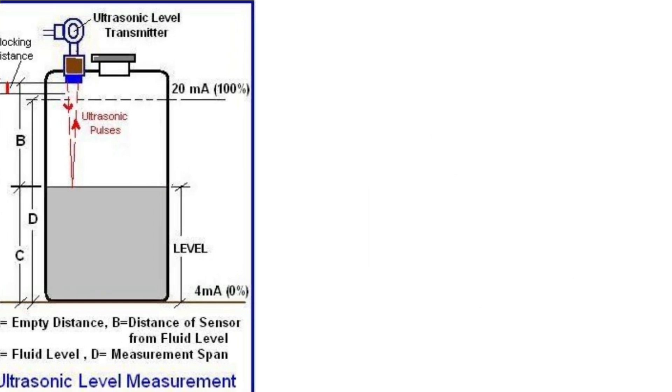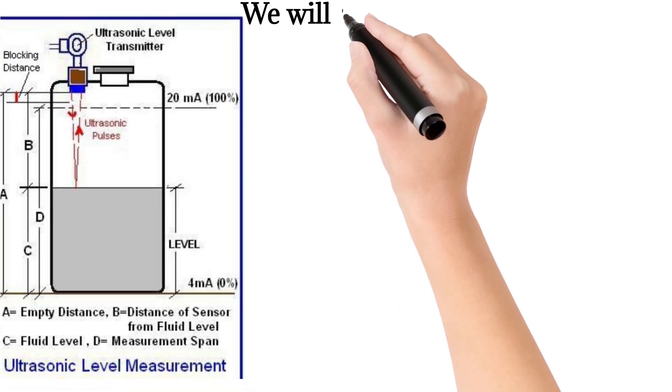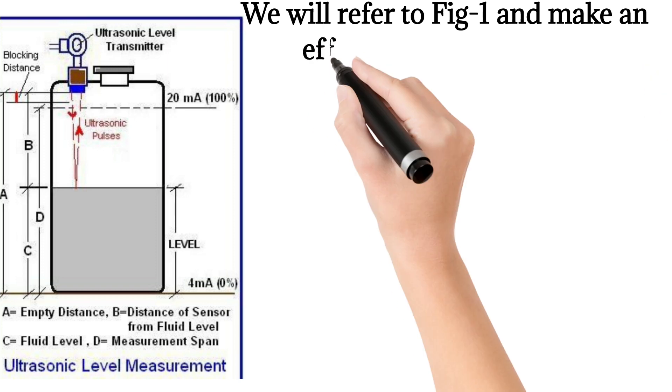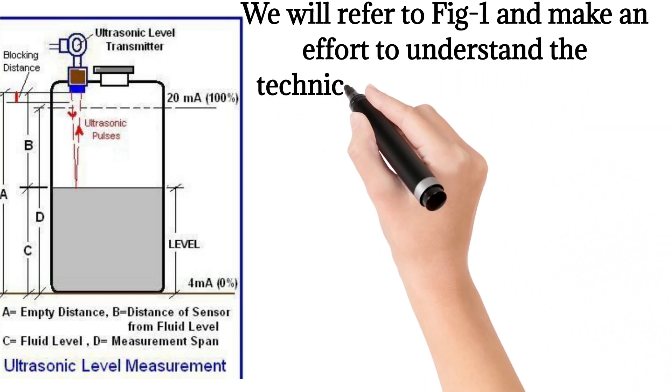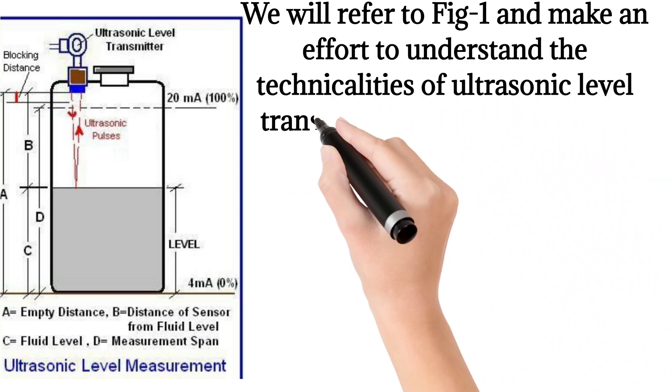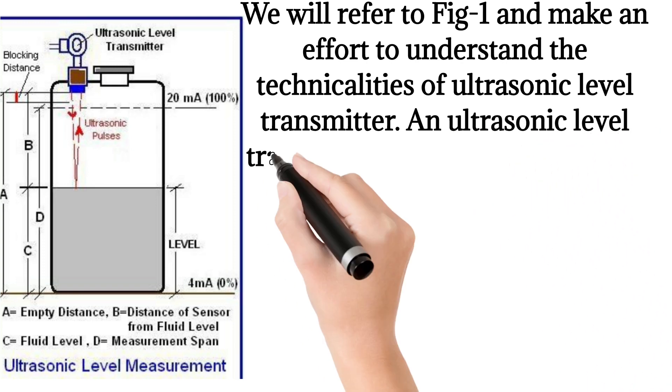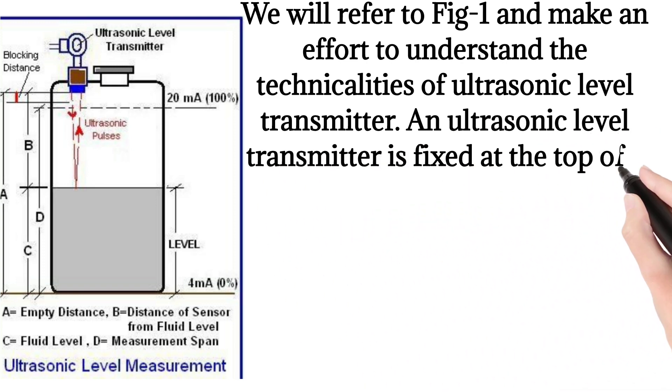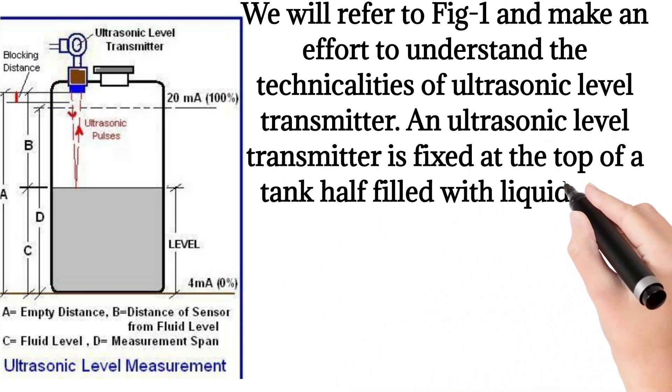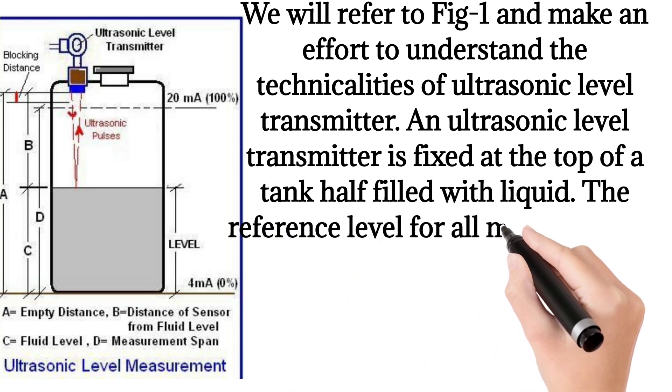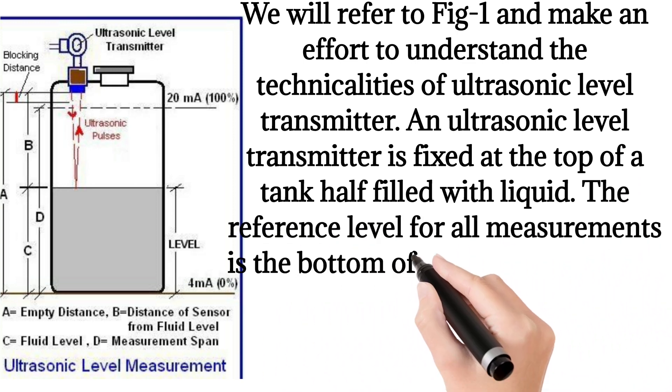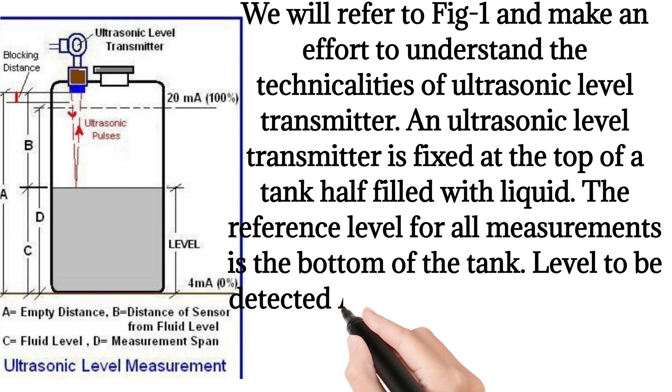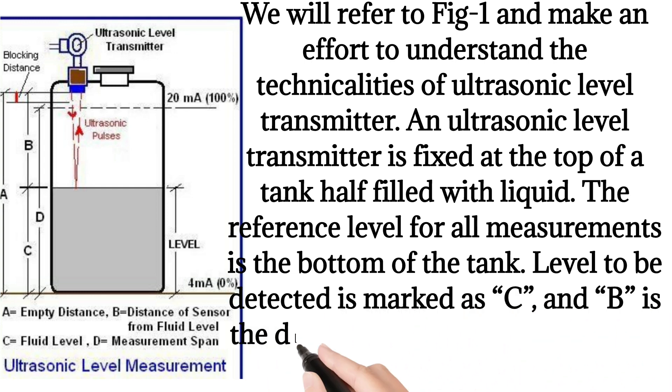We will refer to Figure 1 to understand the technicalities of ultrasonic level transmitters. An ultrasonic level transmitter is fixed at the top of a tank half filled with liquid. The reference level for all measurements is the bottom of the tank. The level to be detected is marked as C, and B is the distance of the ultrasonic sensor from the liquid level.